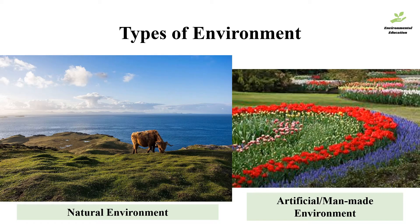Whereas gardens, aquariums, ponds that human beings make for themselves, or even farmlands that we use, croplands and artificial farming — all of that comes under man-made or artificial environment. Both types of environments equally influence our daily lives.